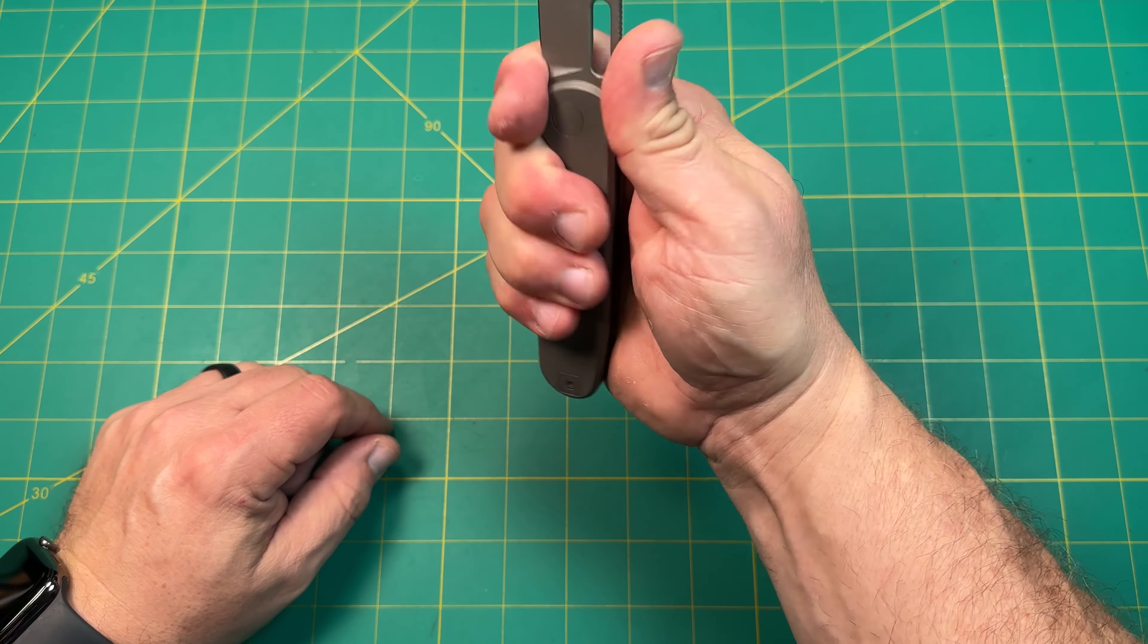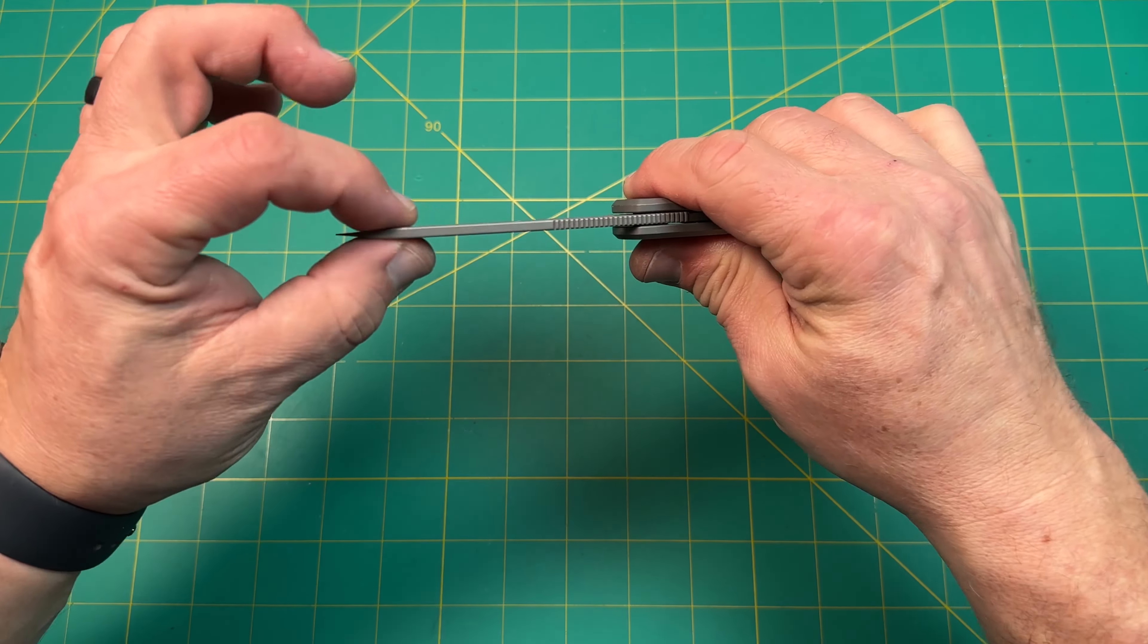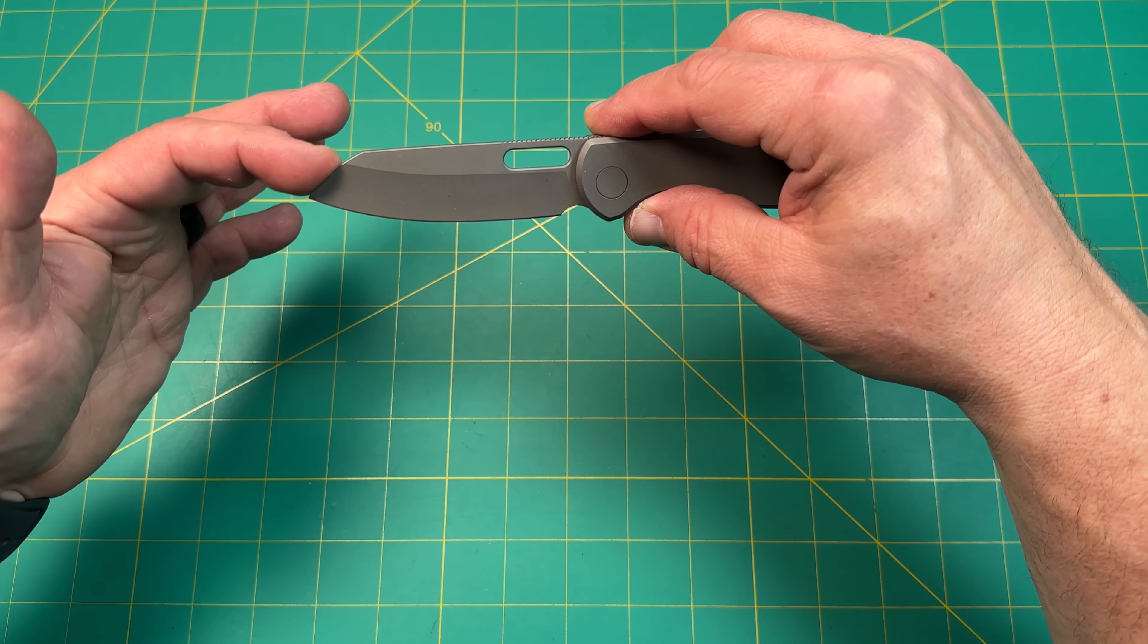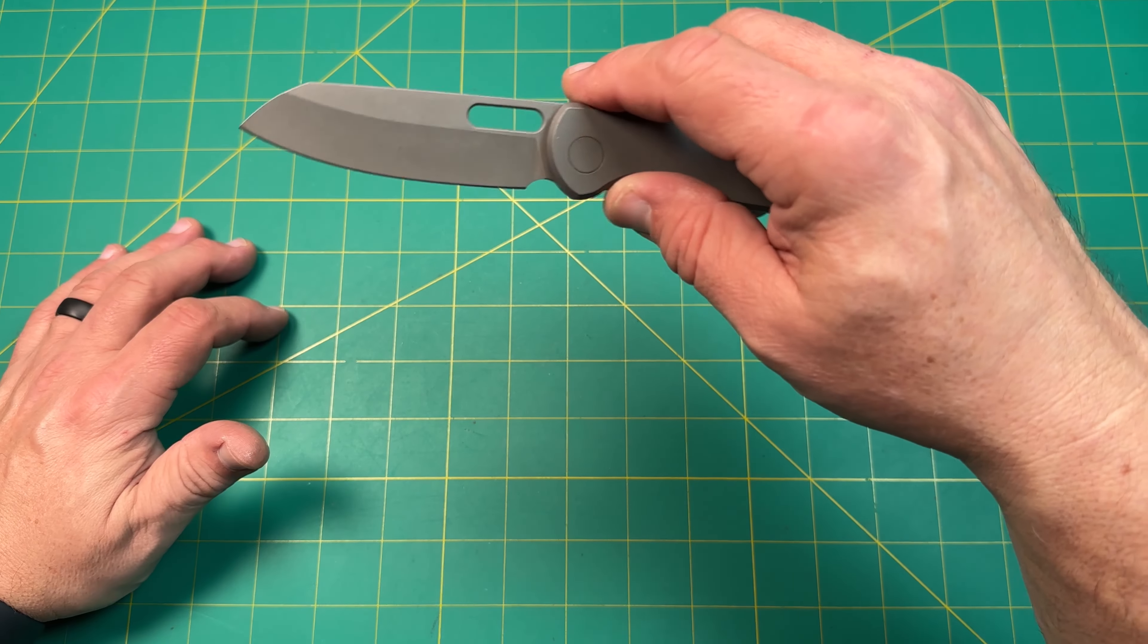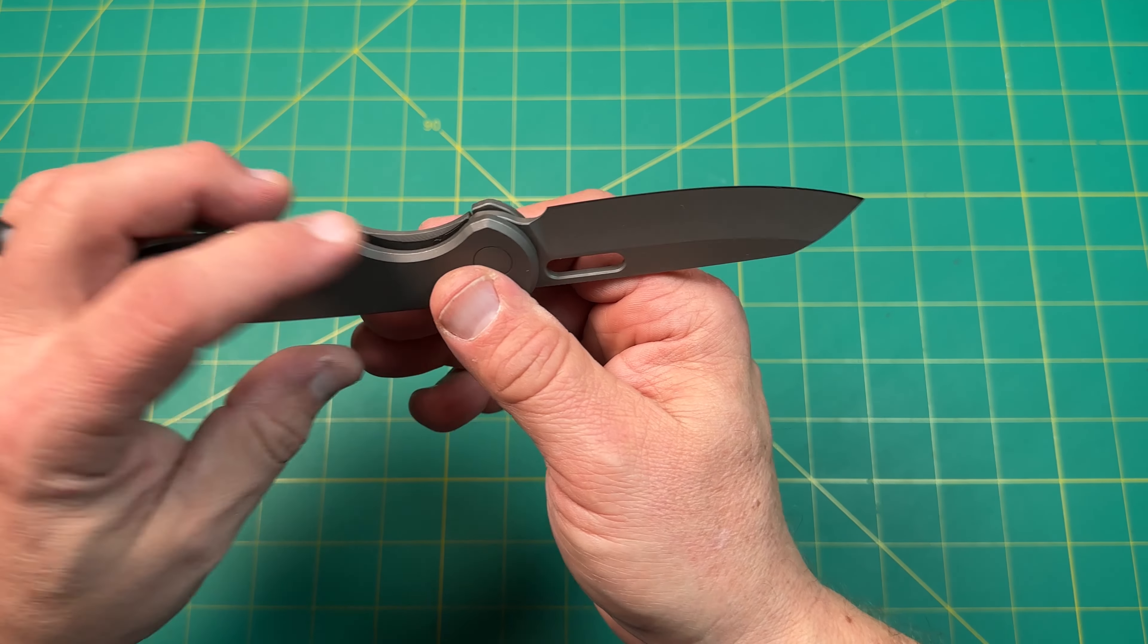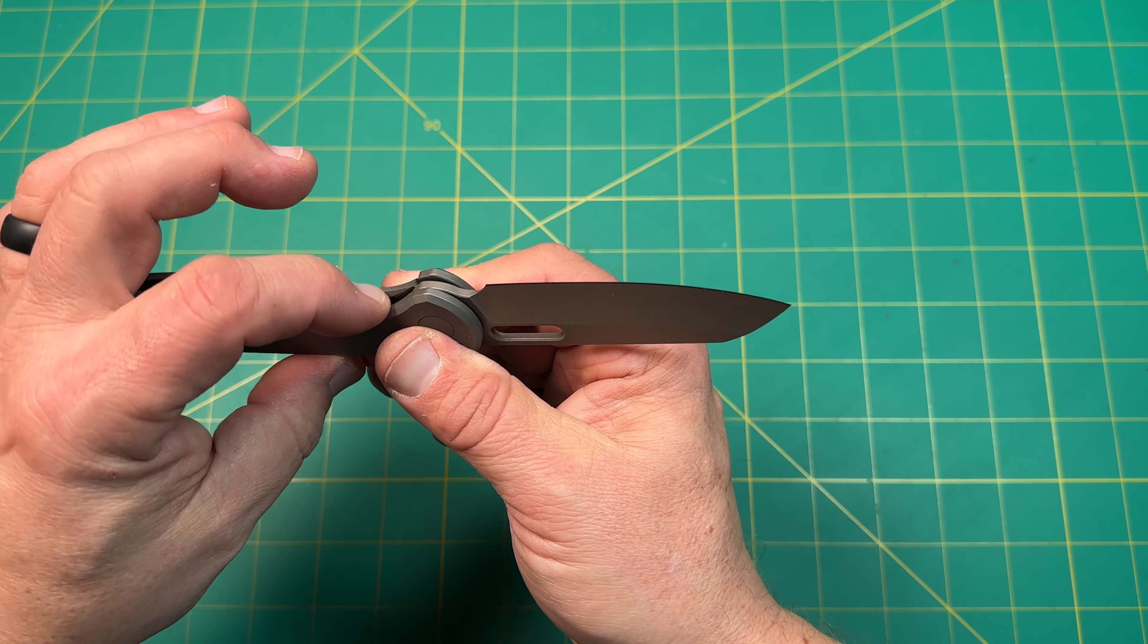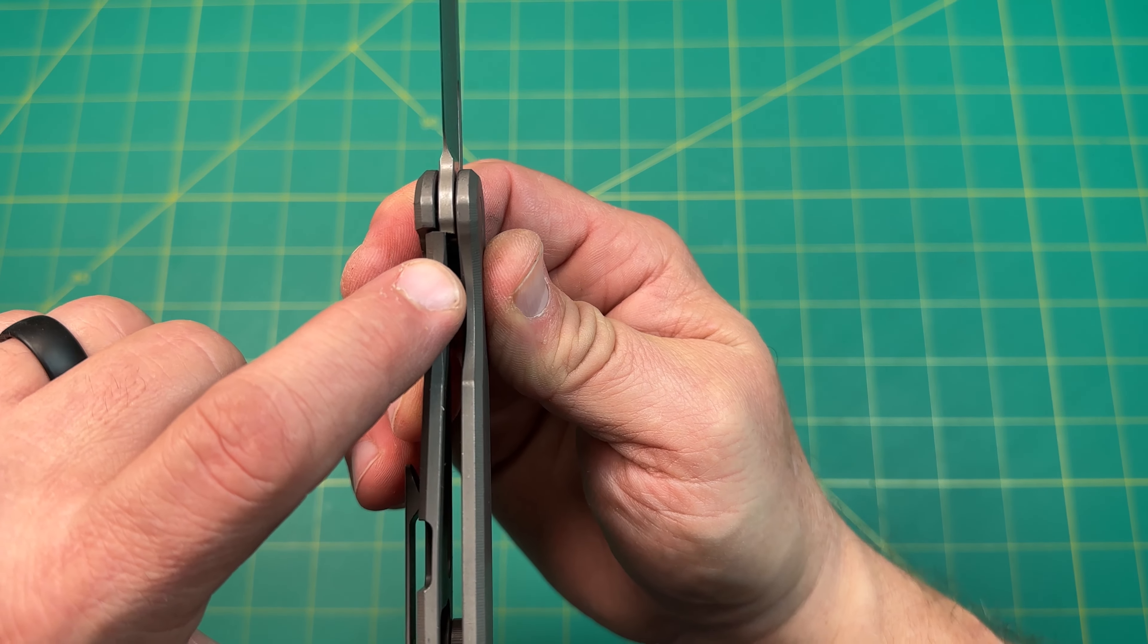Like that jimping. You could choke up here for sure. Pinch grip. Yep, definitely. It's got a nice thick tip. This is definitely what I would consider a sheep's foot. Some people might call it a wharncliffe. Some people might call it a reverse tanto. I call it modified because we're going to call it whatever use suits you. I like this right here. Nice cutout. Great access there to the lock bar. With our lockup, we're a good 40-50%, so that's nice.